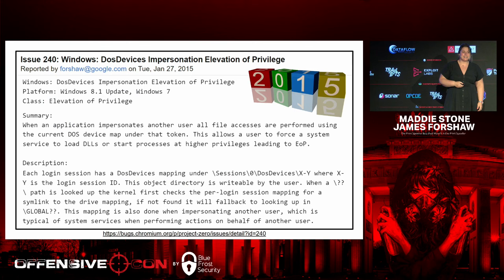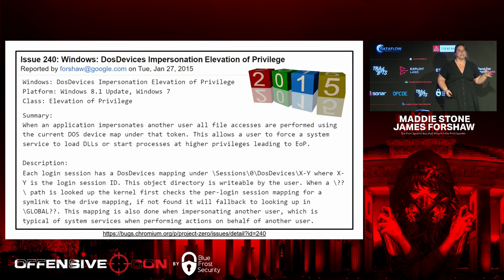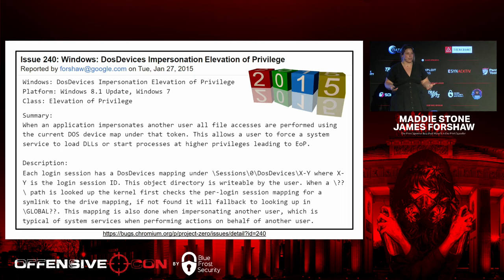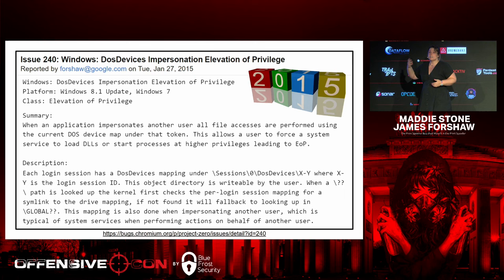This sounded interesting, because it sounded an awful lot like a bug from 2015 that my teammate James had reported. The bug in 2015 was that James had discovered that when a privileged process is impersonating the calling process — trying to look at what does the user who's calling into this privileged server, what does their operating system look like — it's going to use that user's device map.